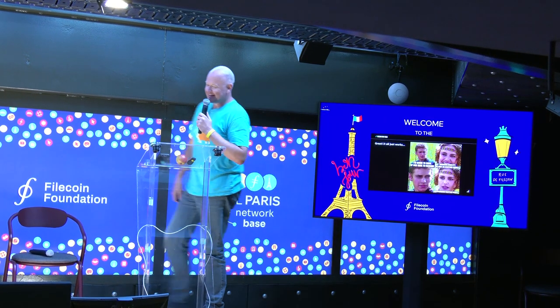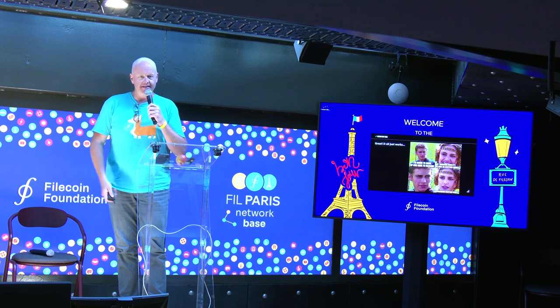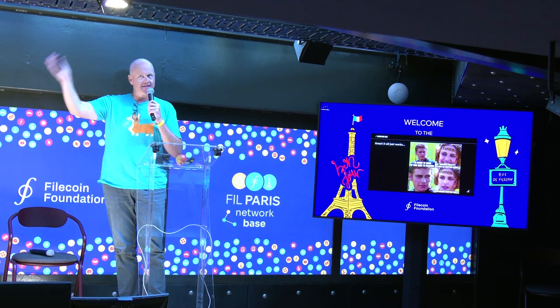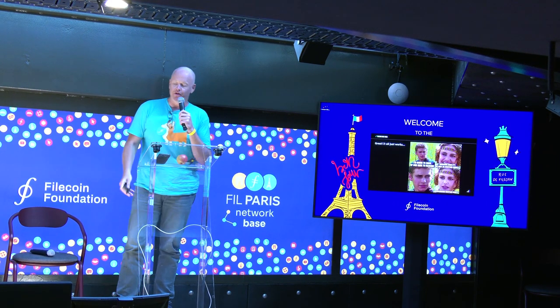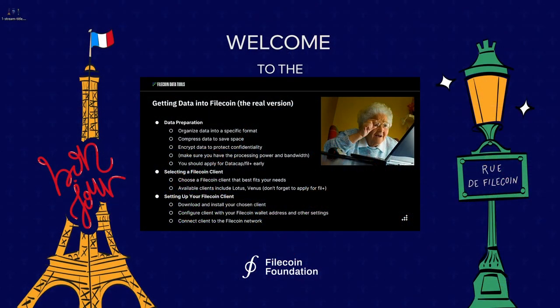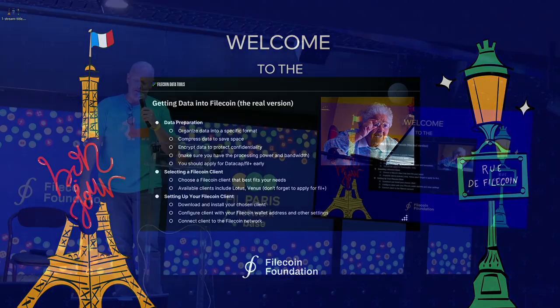Just kidding. The reason I'm really here is that it sounds like a simple process, but end-to-end, when you actually dig into the weeds, it's not quite as simple as Dropbox yet. What we really need to do to get data into Filecoin is data preparation — CAR things up, which is a very heavy process. Encrypt the data, compress the data, make sure you have the processing power and bandwidth, and apply for data cap early because that can be a process.